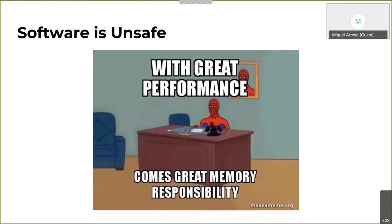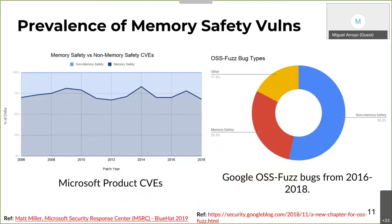Low-level languages like C and C++ trade type safety and memory safety for performance, which in many domains is critical. And with great performance comes great memory responsibility — it's quite easy to shoot yourself in the foot. To put into context just how common these threats are, over 70% of all CVEs in Microsoft products each year are memory safety related. Open source software doesn't fare much better, with over 29% of bugs found by Google's OSS-Fuzz being memory safety related.